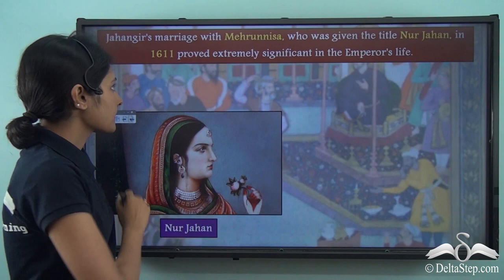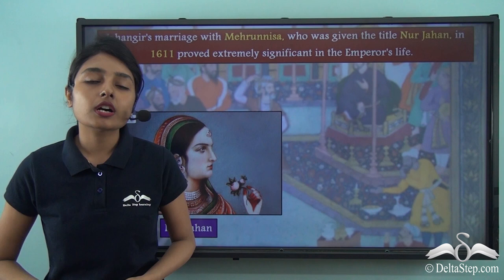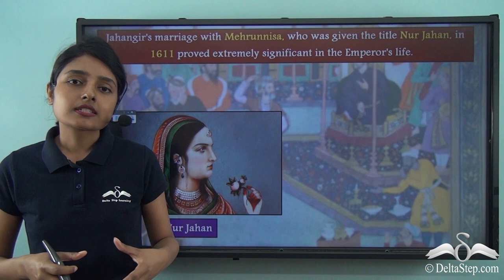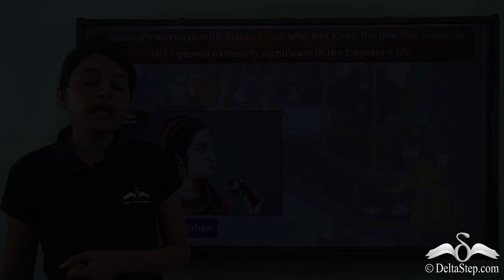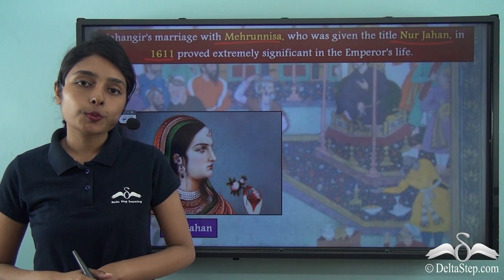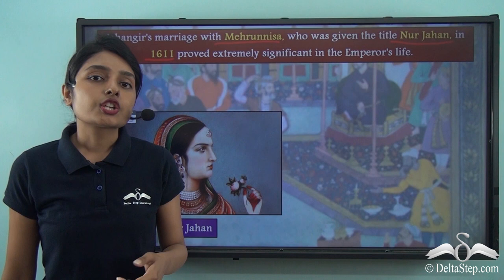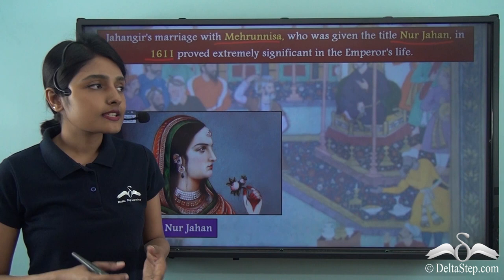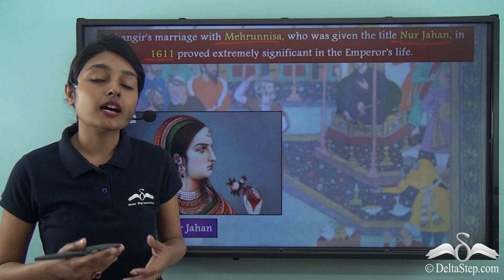Jahangir's life was about to undergo a significant change. While he was carrying forward Akbar's military campaigns — with mixed success — in 1611 Jahangir married Mehrunissa, the widow of a Persian nobleman named Sher Afghan. This marriage proved very crucial in the emperor's life because Mehrunissa was exceptionally clever and became a very strong queen consort.